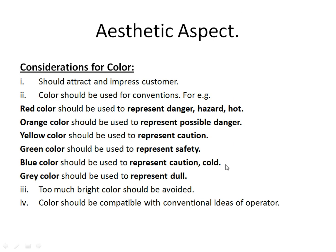The next consideration is done for color. The color should be attractive and impressive. The color should be used according to some conventions used in industry: red color is used for representing danger, hazard, or a hot environment; orange color is used for representing possible danger; yellow color is used for representing caution; green color is used for representing safety; blue color is used for representing caution or cold; and lastly, gray color is used for representing dull. All these color codes are known as D. Morgan's color codes, which are used for choosing the proper color of a component.